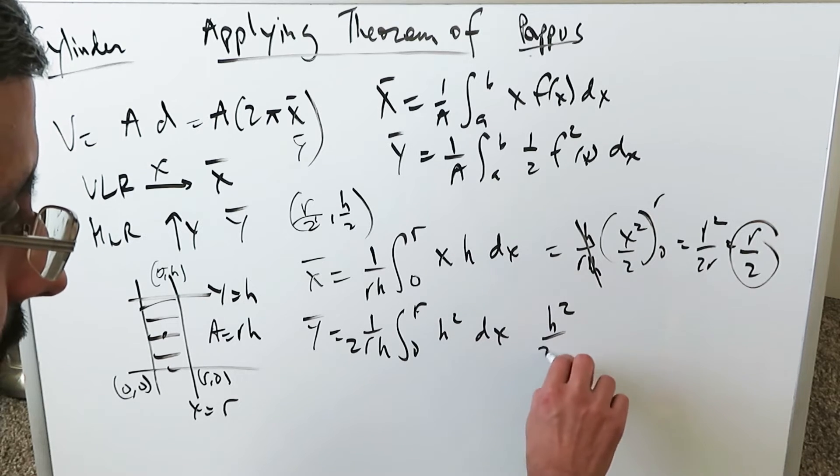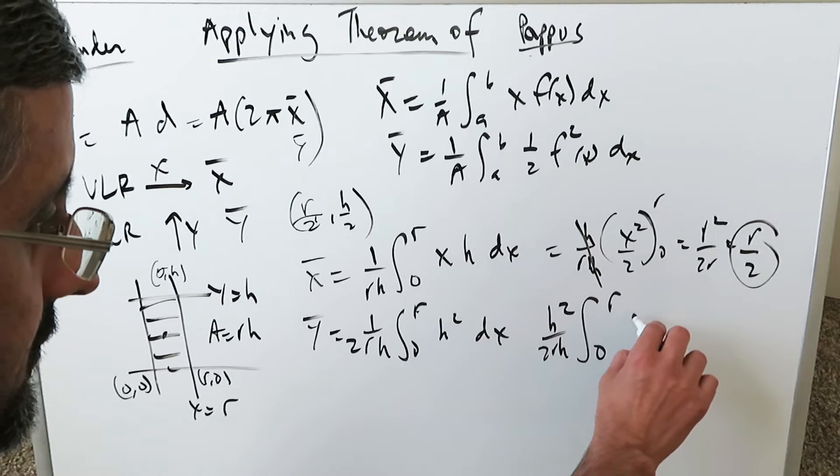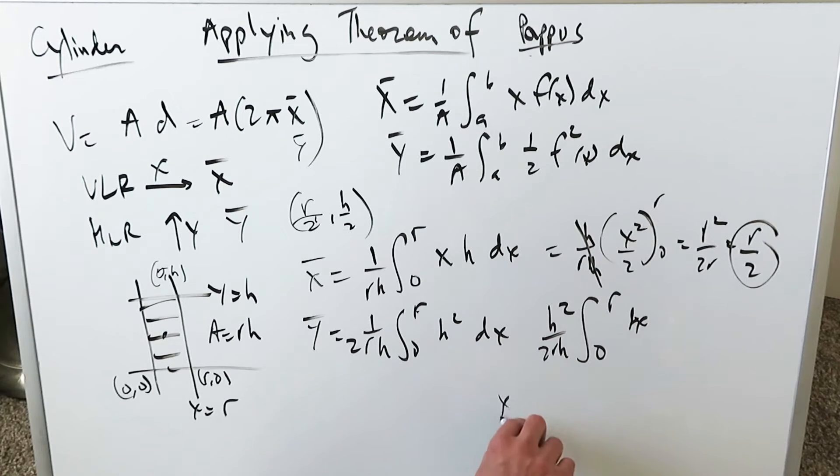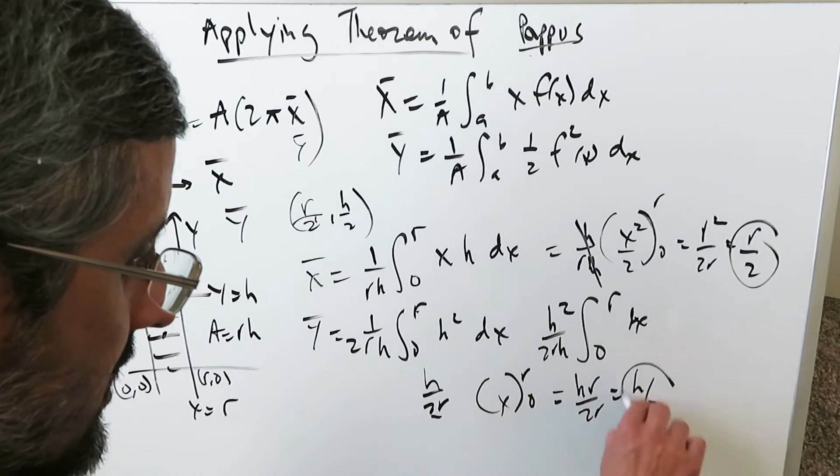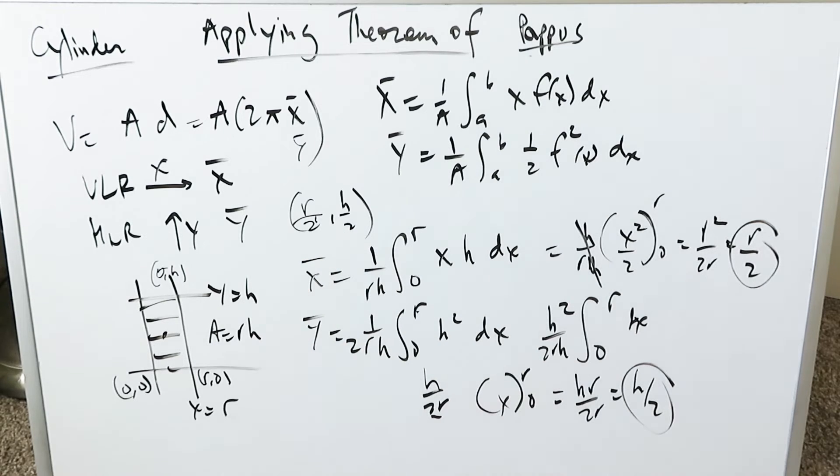You'll have h squared over 2rh all of it getting pushed out, 0 to r dx. You have x coming here in the antiderivative of r and 0. You can cancel out, you'll have h over 2r. When you bring in the antiderivative of limits you'll have h r over 2r which will be h over 2. Your y value.